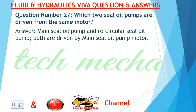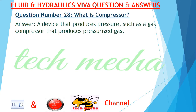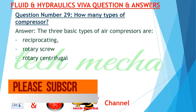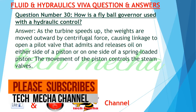Question number 28: What is a compressor? Answer: A device that produces pressure, such as a gas compressor that produces pressurized gas. Question number 29: How many types of compressor are there? Answer: The three basic types of air compressors are reciprocating, rotary screw, and rotary centrifugal.